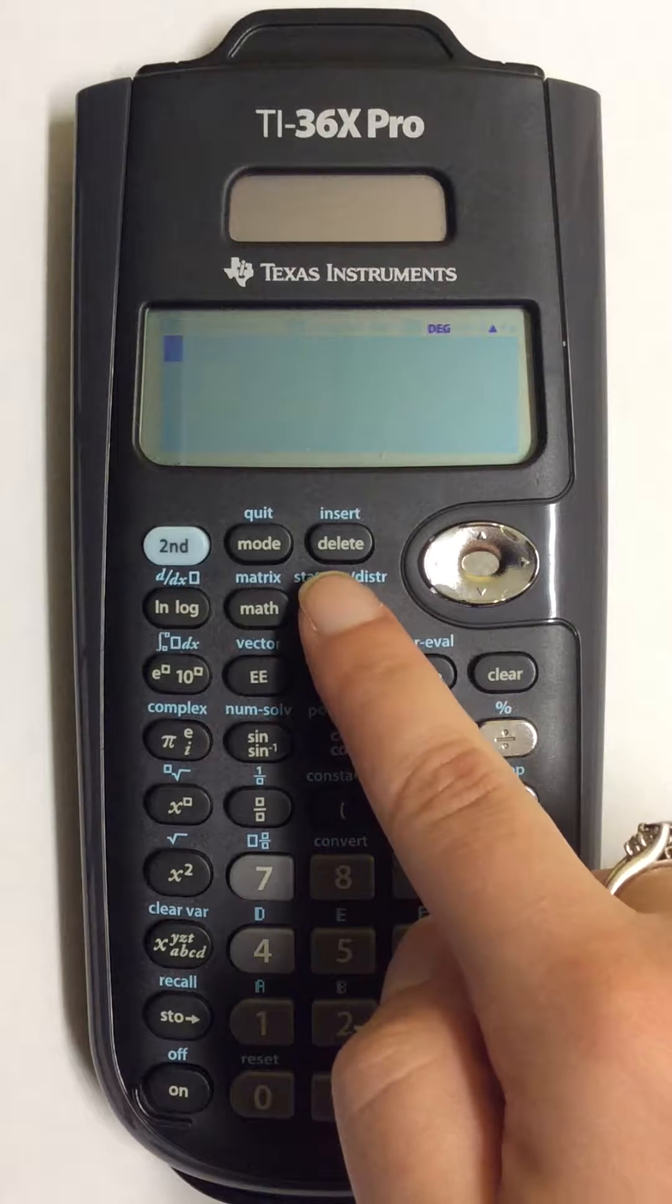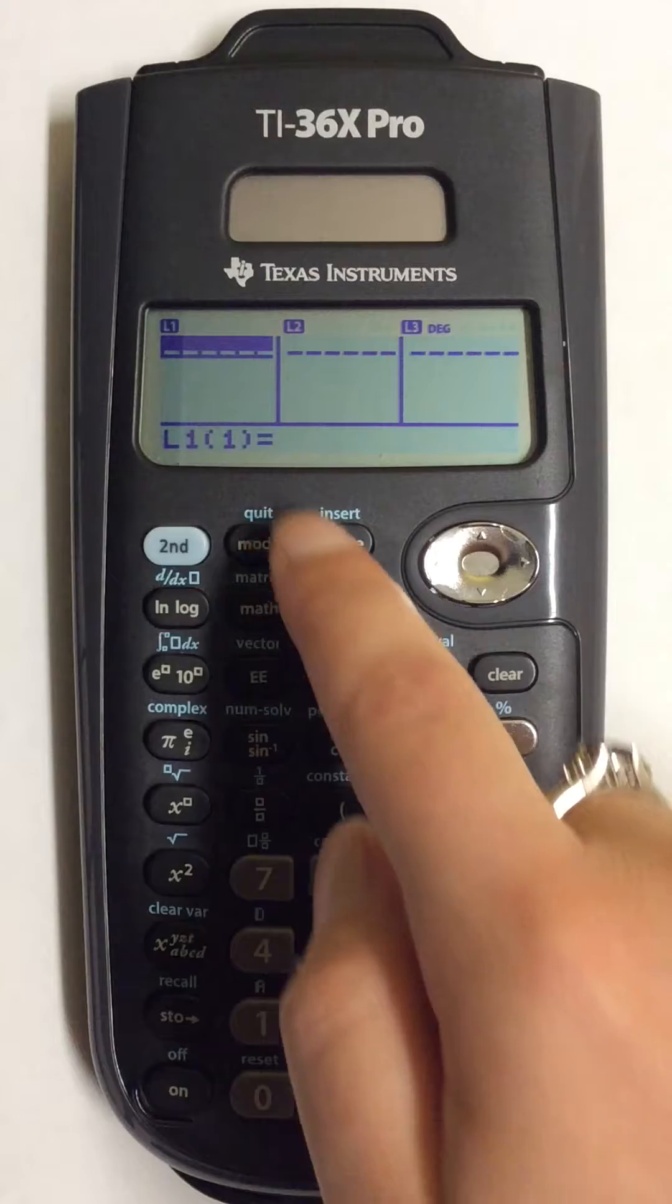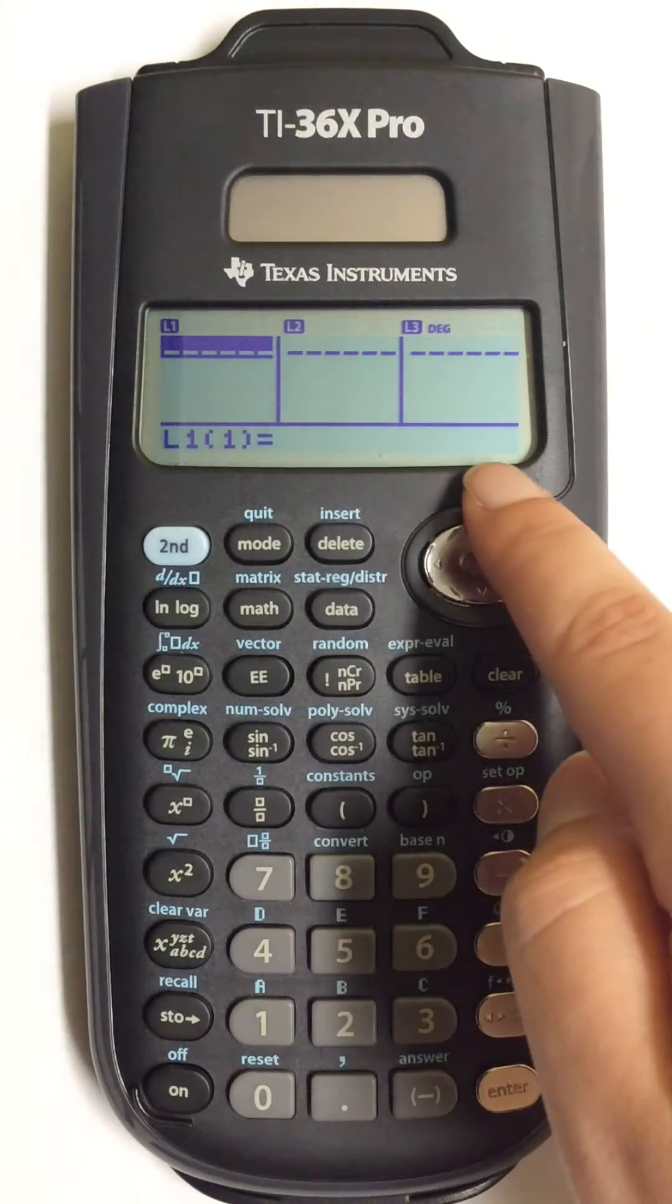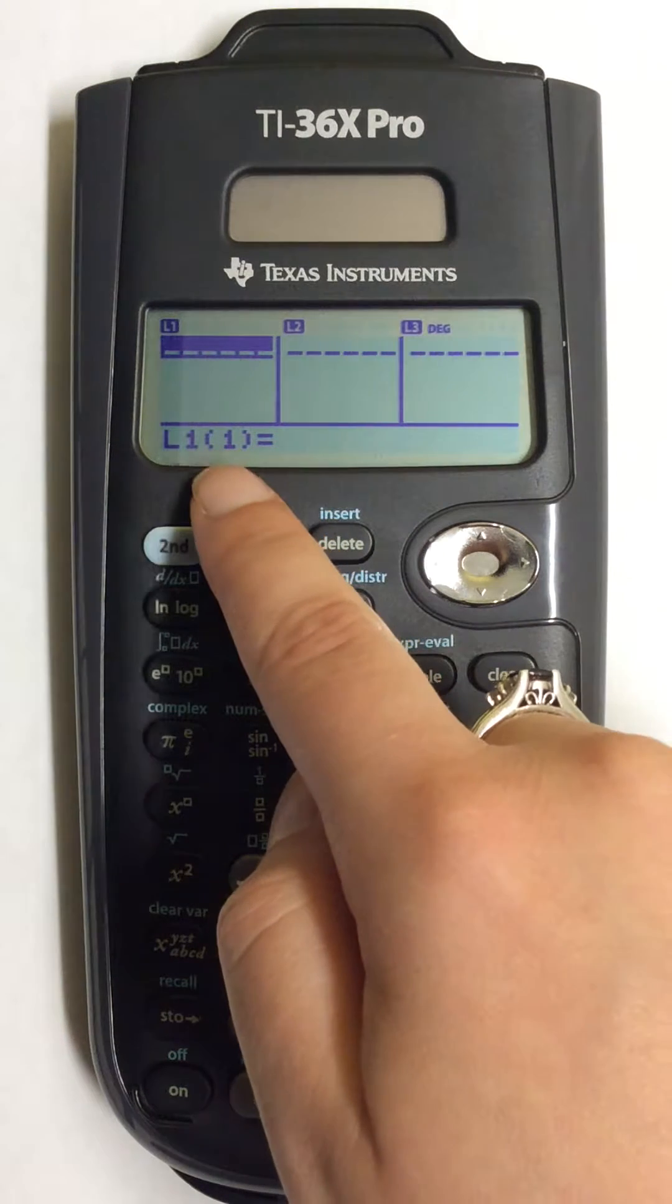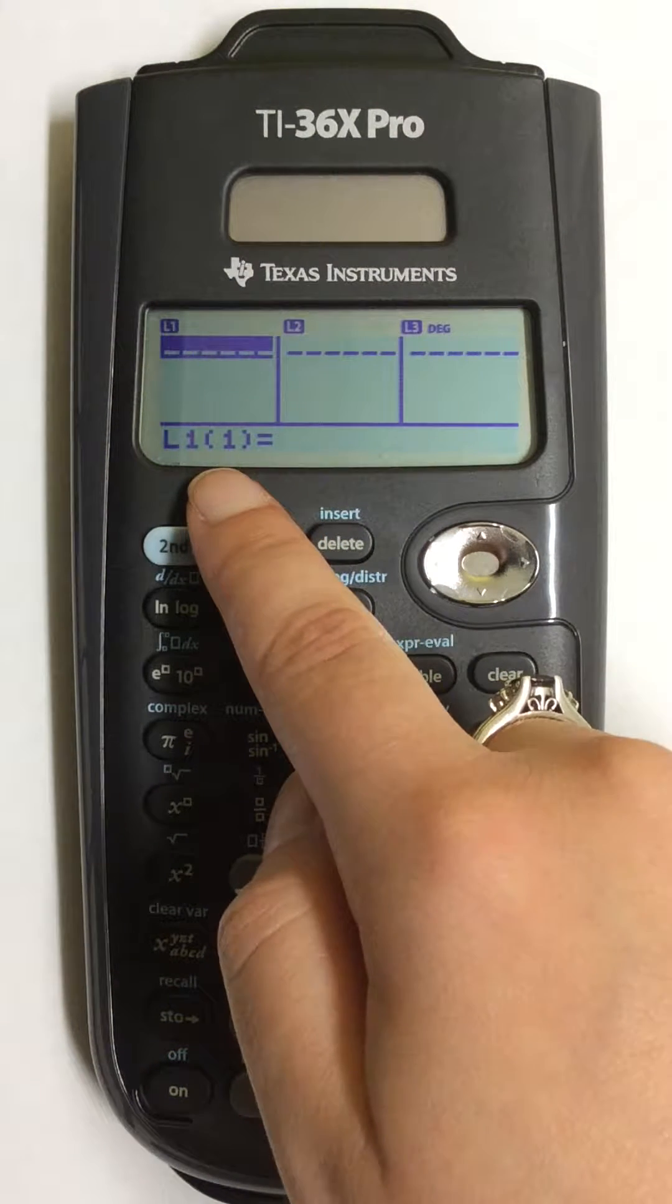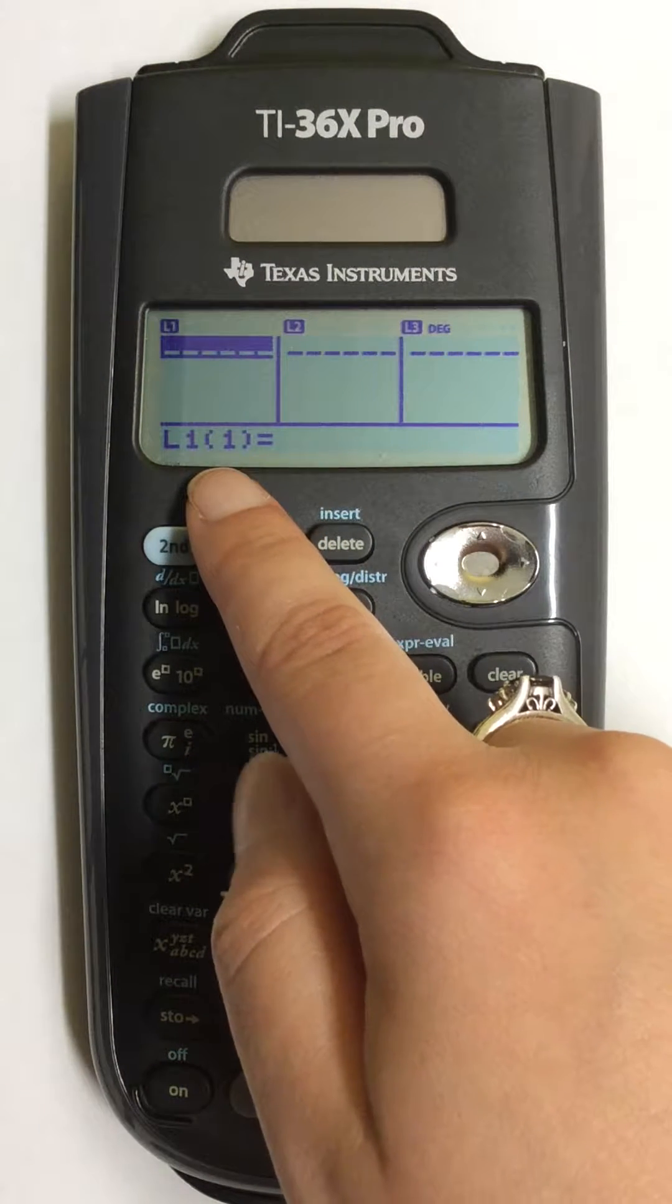To start, I'm going to press the data button and then all of my lists show on the screen. I'm going to start by entering my X values in the first list on the left.